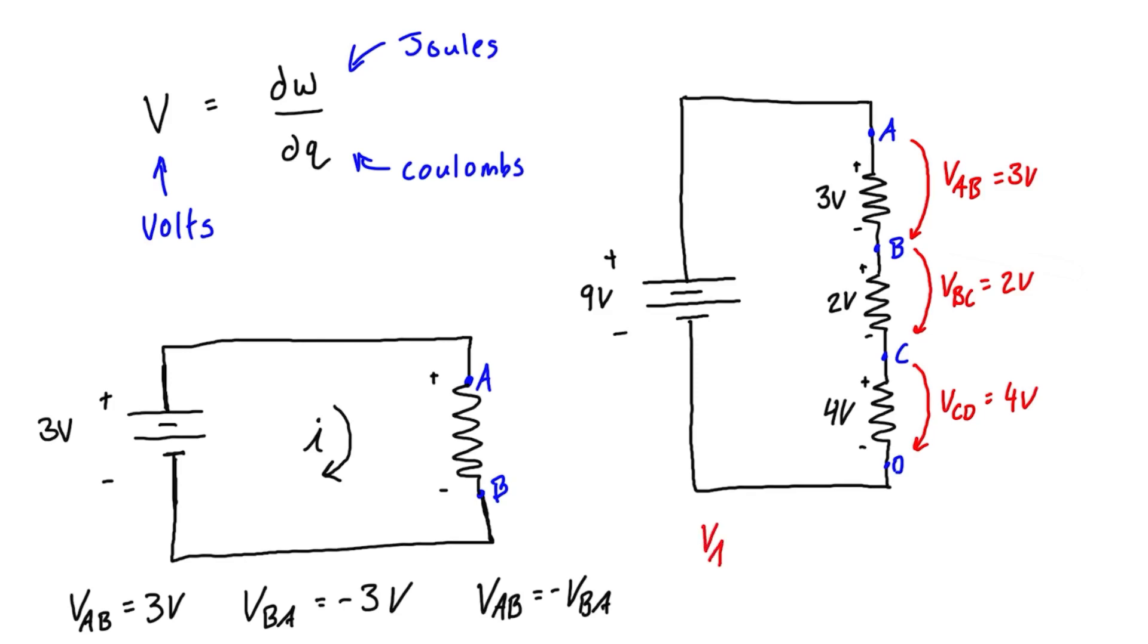We could also check the voltage drop from point A to point C. That would be Vac, which equals the sum of these voltages. If we drop three volts and then another two, we're dropping a total of five volts from point A to C.